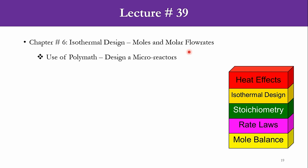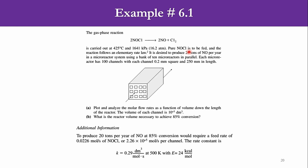You can see how we had calculated and derived the equations, and now we will be using these equations in Polymath. That was example number 6.1: an irreversible second-order elementary reaction system taking place in microreactors connected in parallel, with temperature at 425 degrees centigrade, pressure at 1641 kilopascal, pure NOCl is to be fed. The question was: what is the reactor volume necessary to achieve 85% conversion?